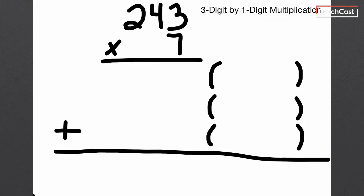All right, summer schoolers, if you're seeing this, that means you did a wonderful job with two by one multiplication. So today, you're going to try three digit by one digit.